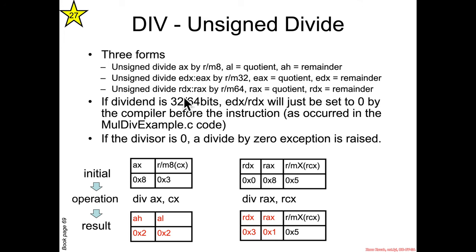And in 64-bit, same thing, upper 64 bits of 128 value in RDX, lower 64 in RAX, divided by an RM64. Quotient goes into RAX, remainder goes into RDX.